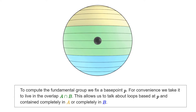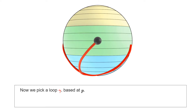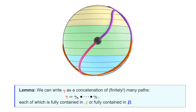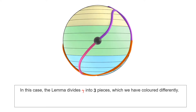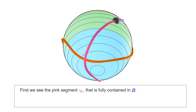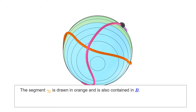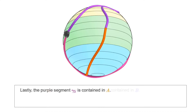Consider then a loop Gamma, based at P and depicted in red. The first lemma we need in order to contract Gamma is the following: Gamma can be written as a concatenation of finitely many paths, such that each path Gamma_i is contained in A or in B. This lemma appeared already when we studied the homotopy lifting property, and it relies on the compactness of the interval. In the present example, an application of the lemma divides Gamma into three pieces: Gamma_I, shown in pink and fully contained in B; Gamma_II, drawn in orange and also contained in B; and Gamma_III, shown in purple and fully contained in A. It is worth remarking that since Gamma_I and Gamma_II are both contained in B, we could regard their concatenation as a single piece, but for this argument this is not particularly important.